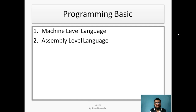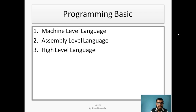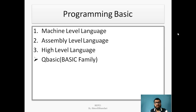For the conversion or language translation, an assembler is used for assembly-level language. Now we have high-level language. QBasic is one of the high-level languages of the BASIC family. There are other languages in the BASIC family like QuickBasic, PB, VisualBasic, TurboBasic, etc.